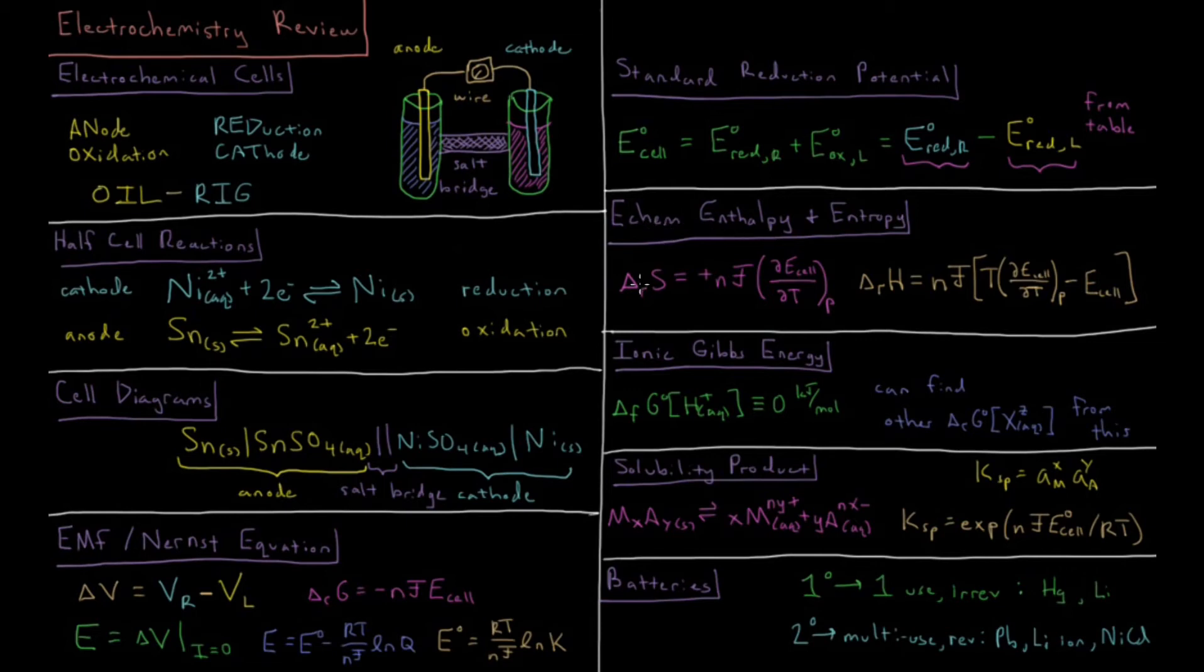We can also determine the entropy and enthalpy changes during electrochemical reactions. The entropy comes from the number of moles transferred times Faraday's constant times the partial derivative of the EMF with respect to temperature at constant pressure.